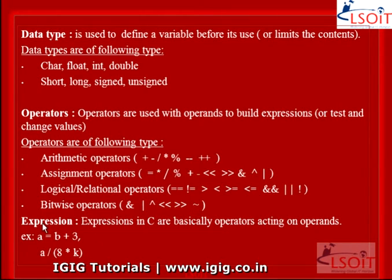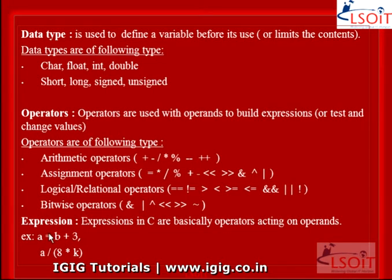Expressions. Expressions in C are basically operators acting on operands. Example: A = B + 3, and A = (A / (8 * K)) + B + 3. Here the value of 8 and K are multiplied, then divided by A, and then B + 3 is added and assigned to A through the assignment operator. We will study C expressions in more detail in upcoming tutorials.